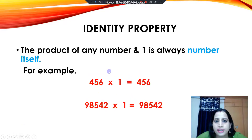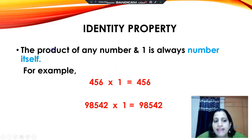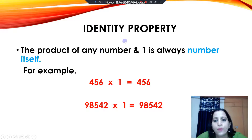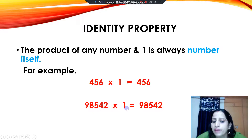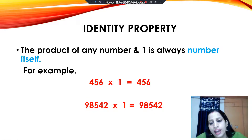Now let's move on to the identity property. According to this property, whenever we multiply any number by 1, we will always get the number itself. For example, 456 multiplied by 1 is equal to 456. Similarly, 98,542 multiplied by 1 is also 98,542. Whether the number is very big — even if we multiply 1 lakh or 1 crore by 1 — we will always get the number itself.